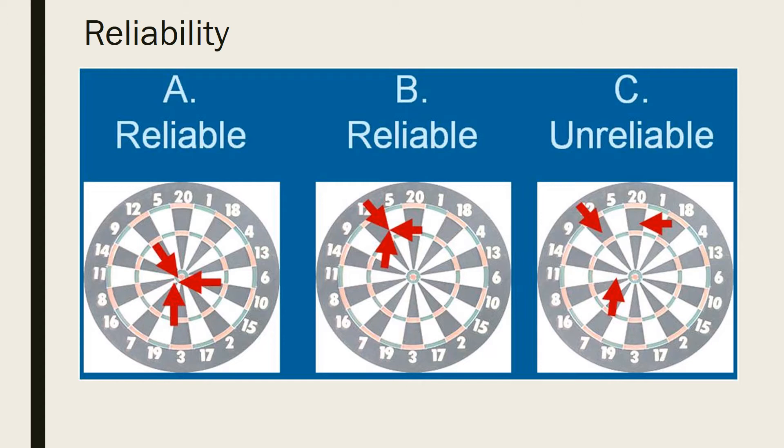However, more about validity in a moment. Board C is not reliable because the darts are all over the board. It is not consistent.